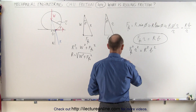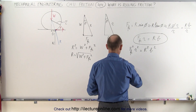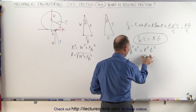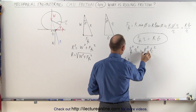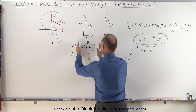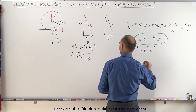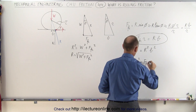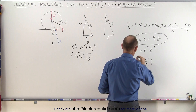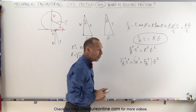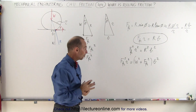Substituting, on the left side we get friction force squared times R squared equal to, on the right side, the load squared plus the friction force squared, multiplied by B squared.